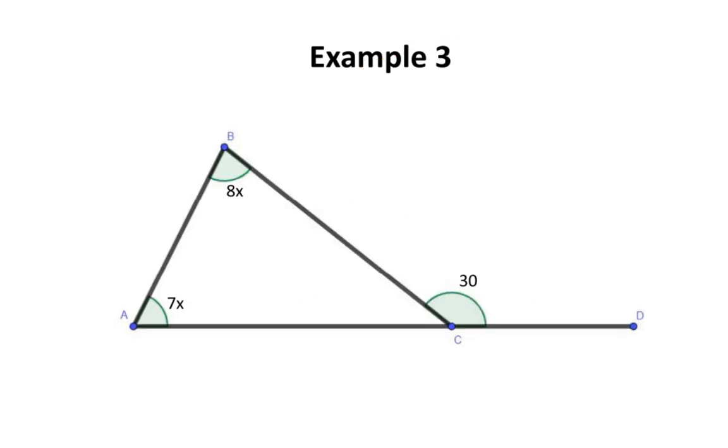In our third example, we can see that two interior angles are given as expressions while the exterior angle is not. We can still represent the situation with an equation. We know that the interior angles, when added up together, will give you this exterior angle.